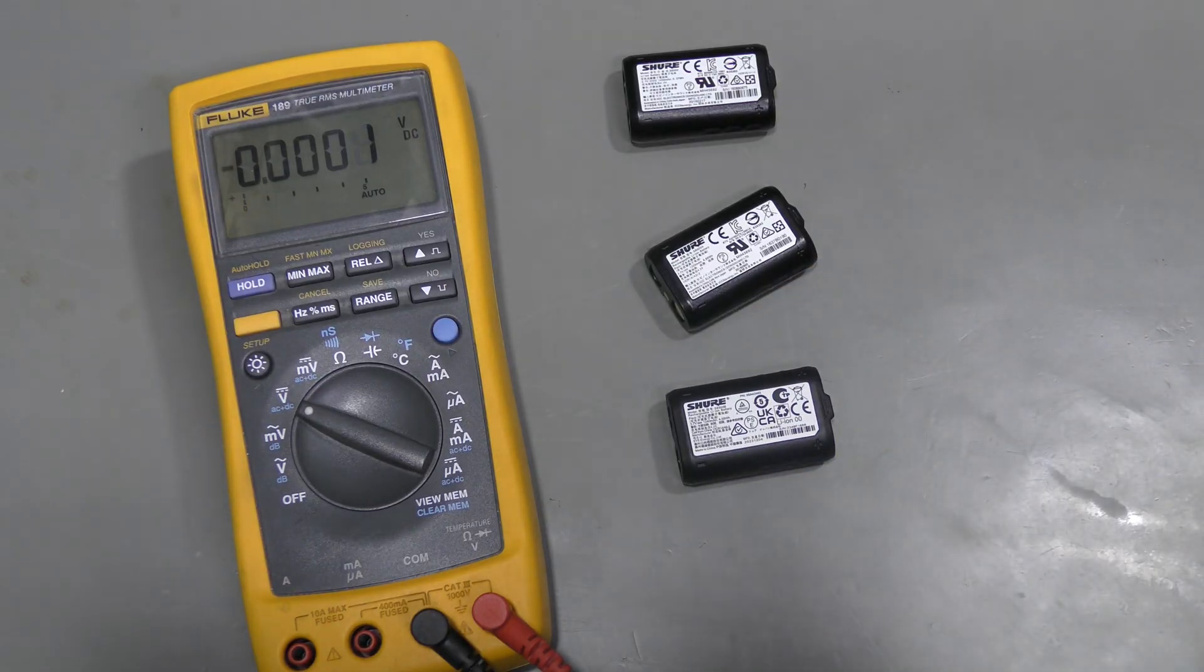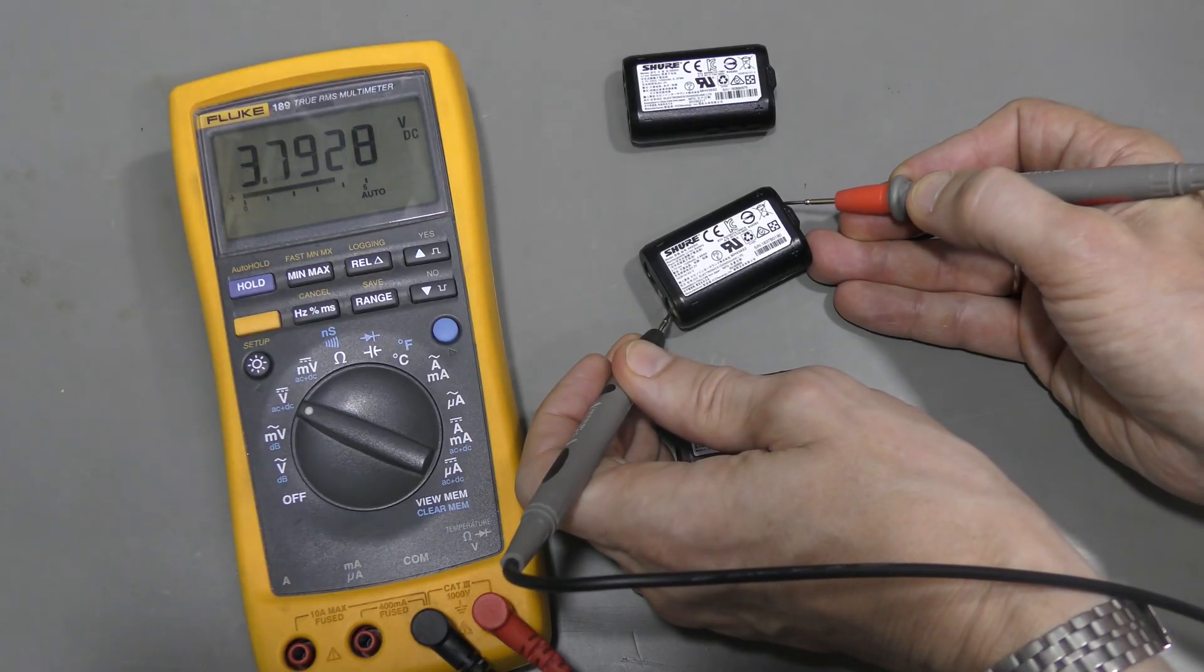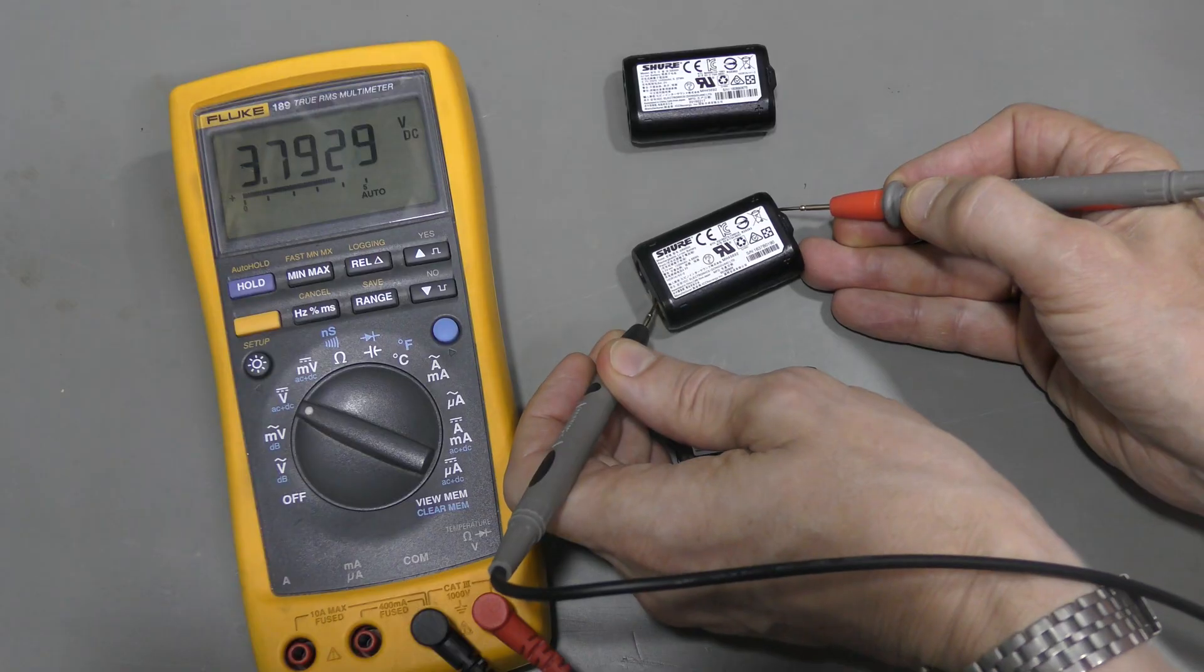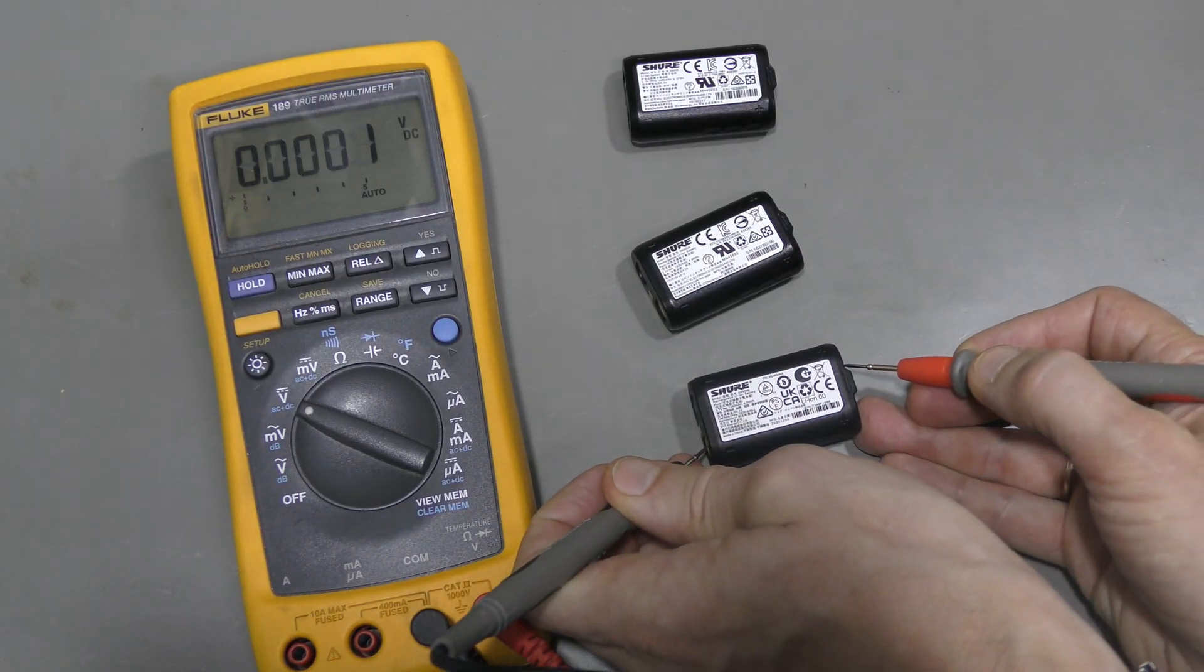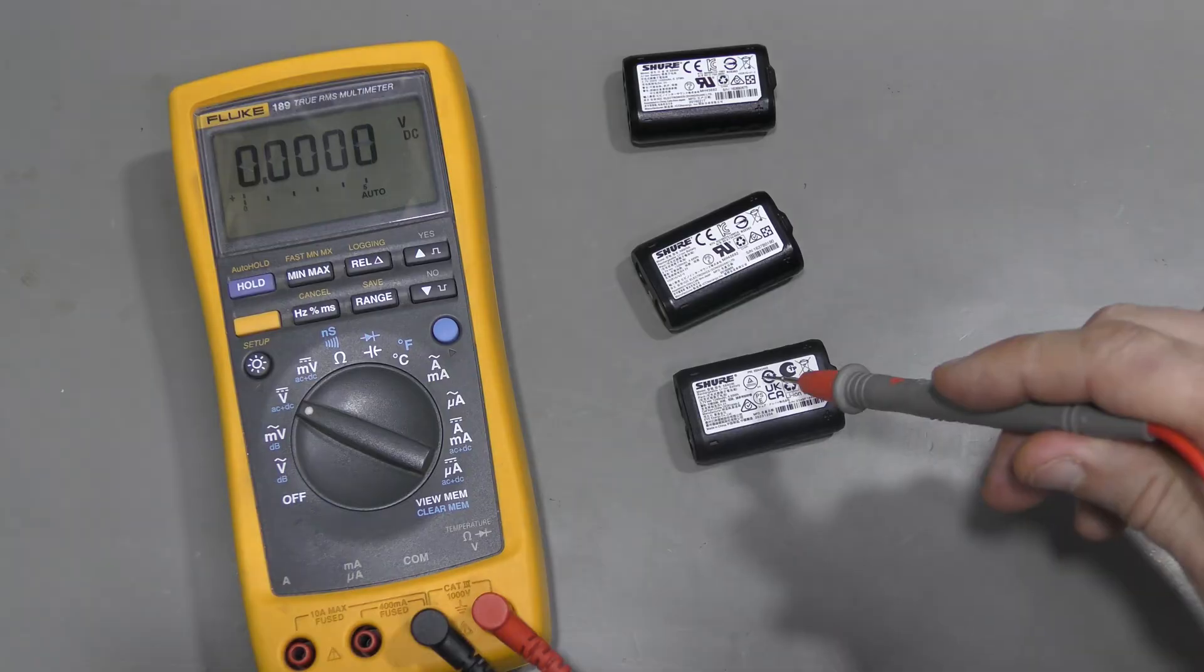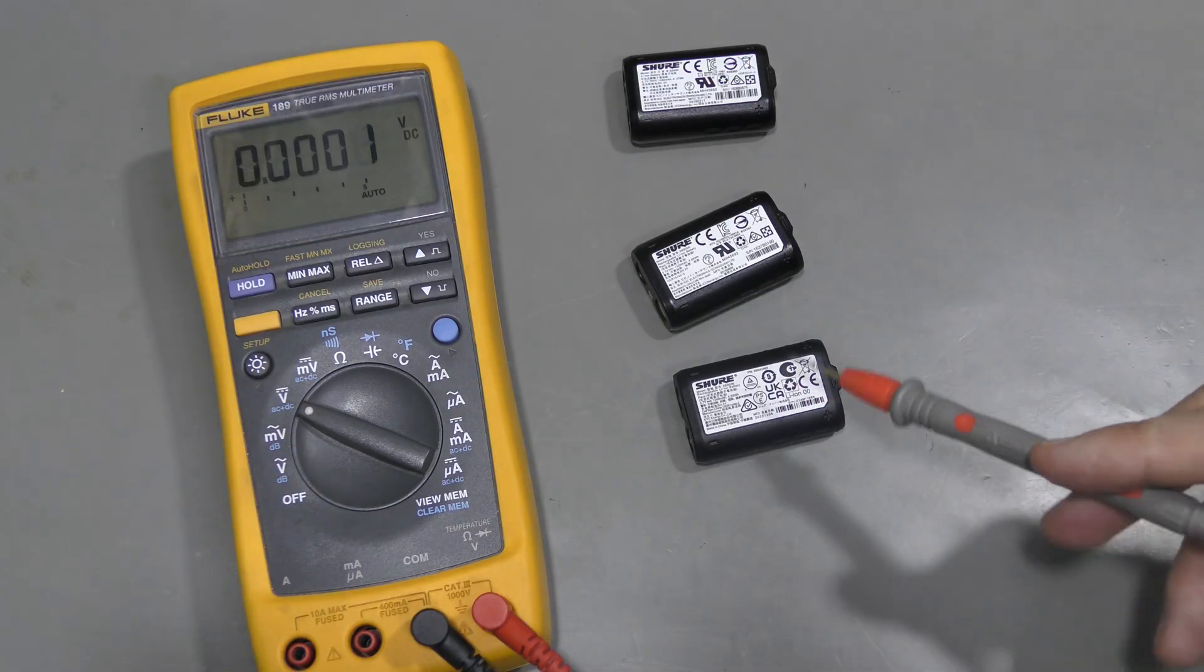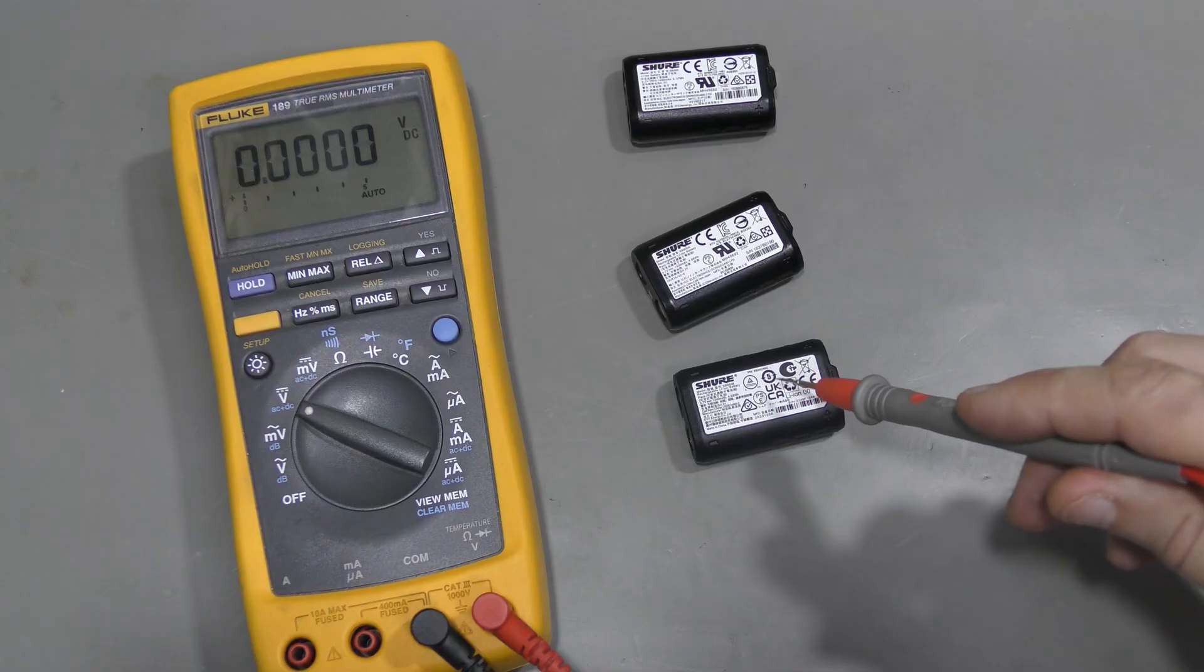So let's measure a good battery. About 3.8V. And this dead battery shows nothing at all.